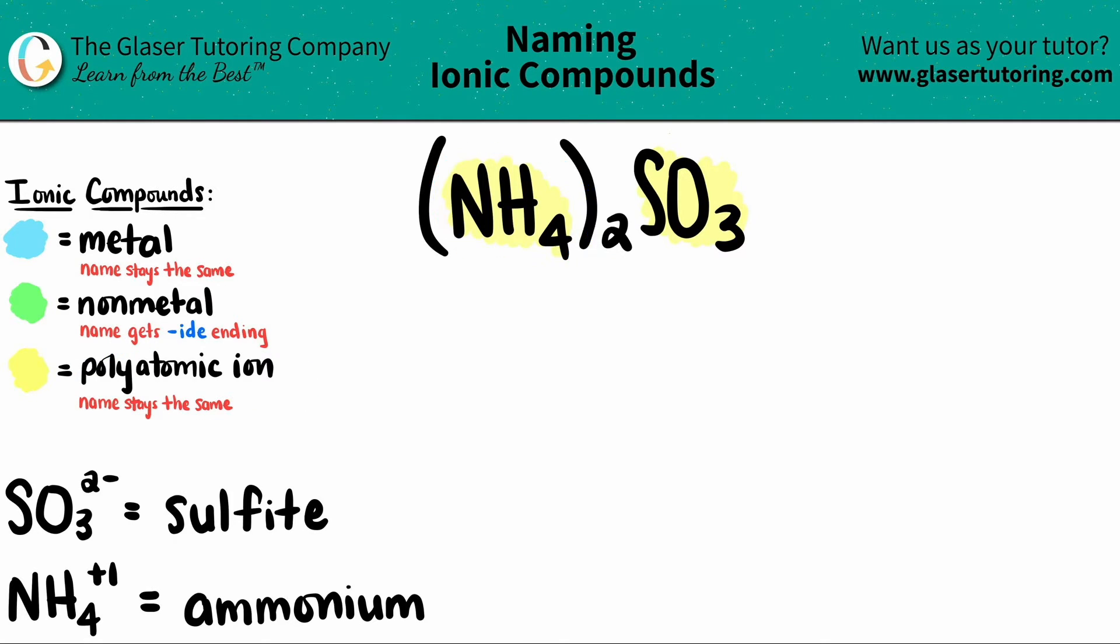NH4 comes first. So ammonium is going to come first. That name stays the same. So it's ammonium. And then SO3. SO3 with sulfite, that name stays the same because it's a polyatomic.